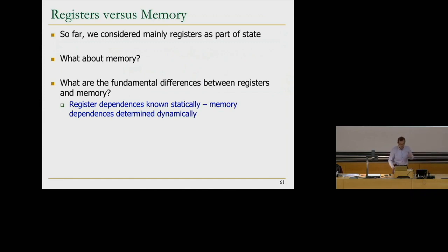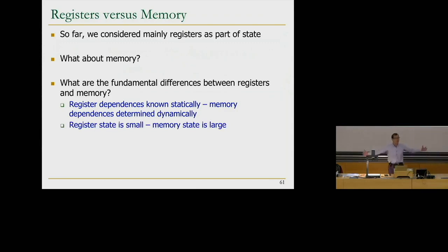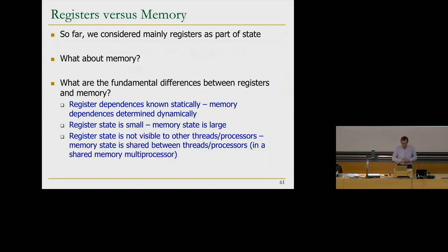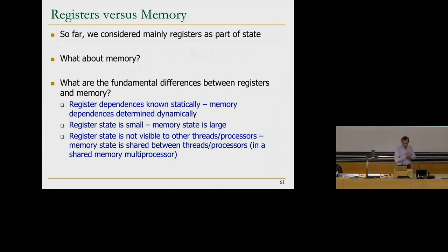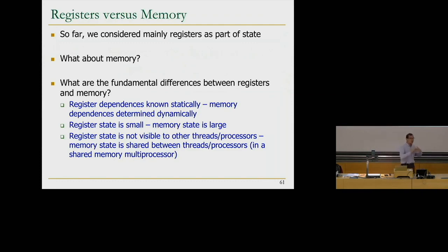On top of this, these addresses are not small — they're large. The register state is very small: 32 or 64 registers. Memory state is huge, and the addresses are very large. Also, if you look at other threads or processors, they don't share registers normally. Different threads don't share registers, so you don't need to worry about them. But memory state in a shared-memory multiprocessor, which is most of what multiprocessors are today, is shared between different threads and processors. This could cause headaches if you update memory state out-of-order, but we're not going to tackle that problem today.